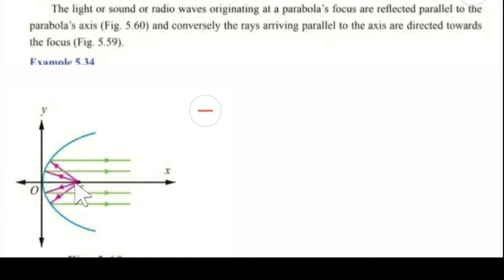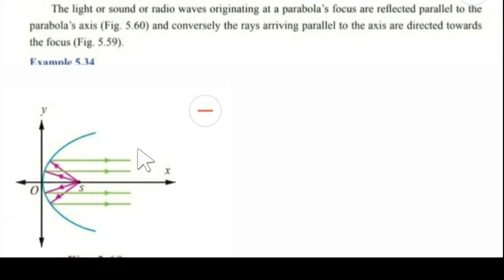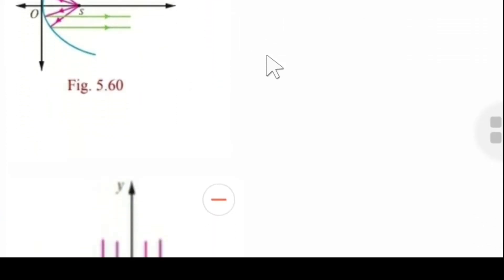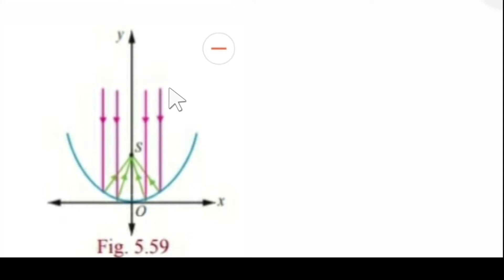So this is the reflective property of parabola: the light or sound or radio waves originating at the parabola's focus are reflected parallel to the parabola's axis. And conversely, the rays arriving parallel to the axis are directed towards the focus. Now see the second diagram — the rays arriving parallel to the axis are directed towards the focus.